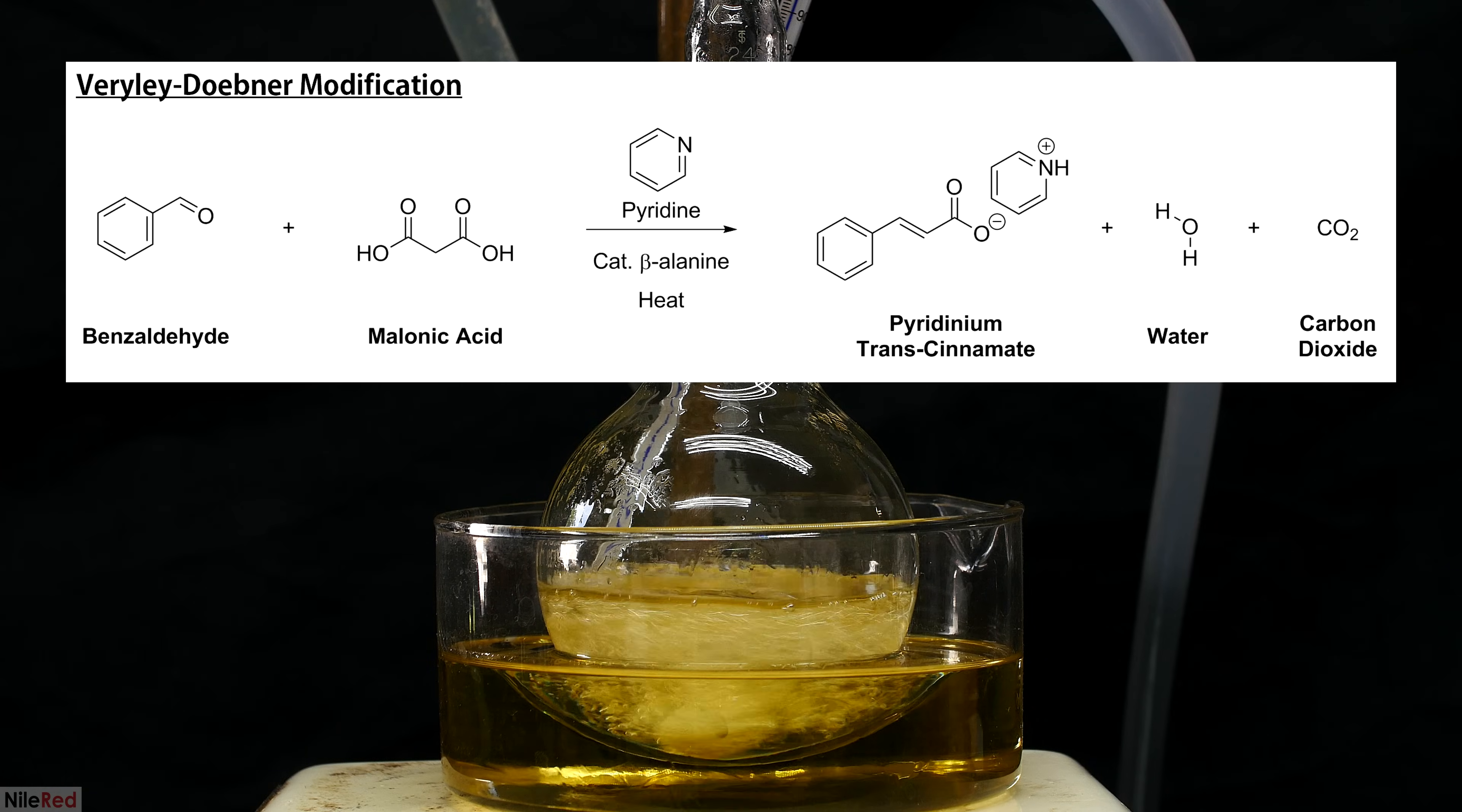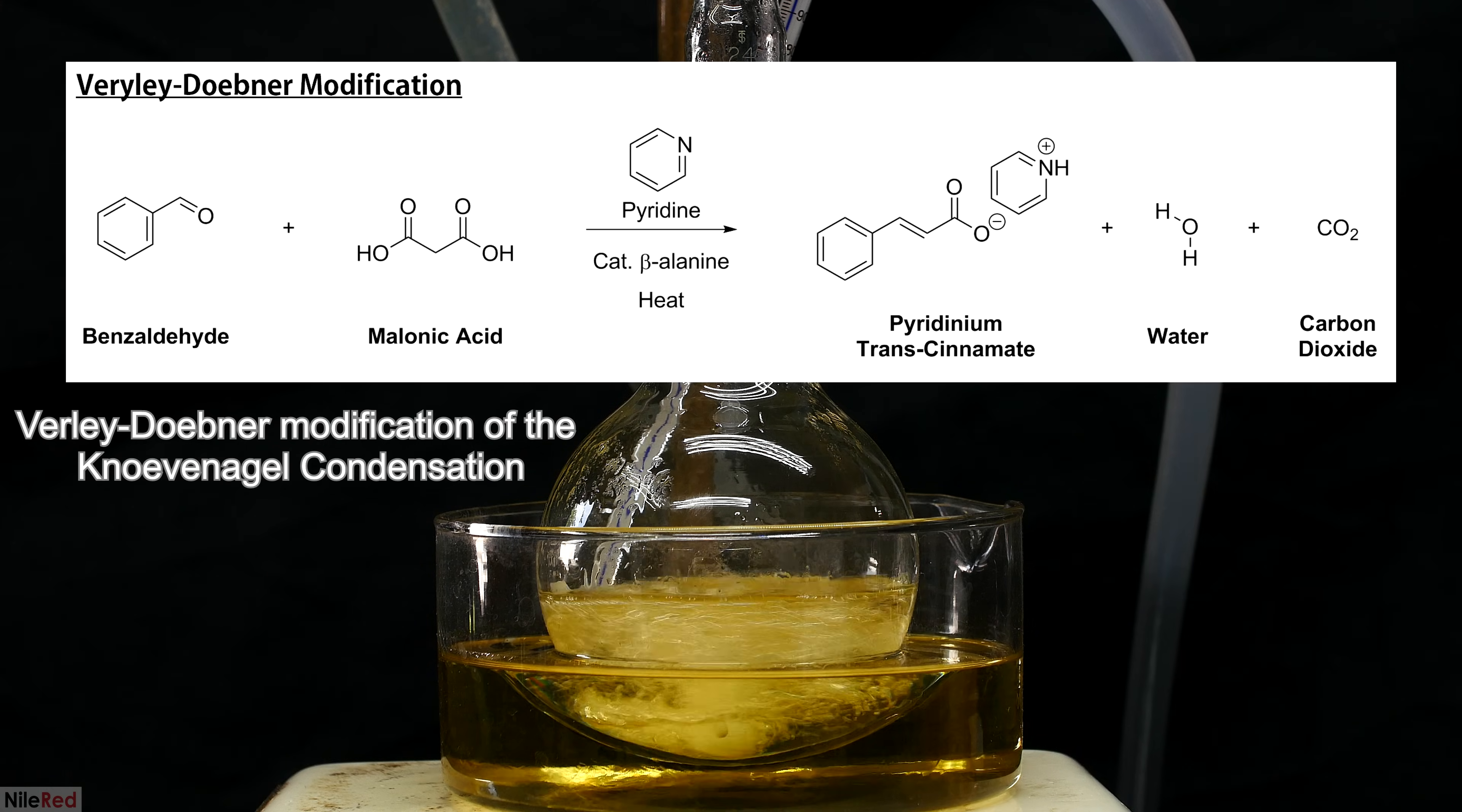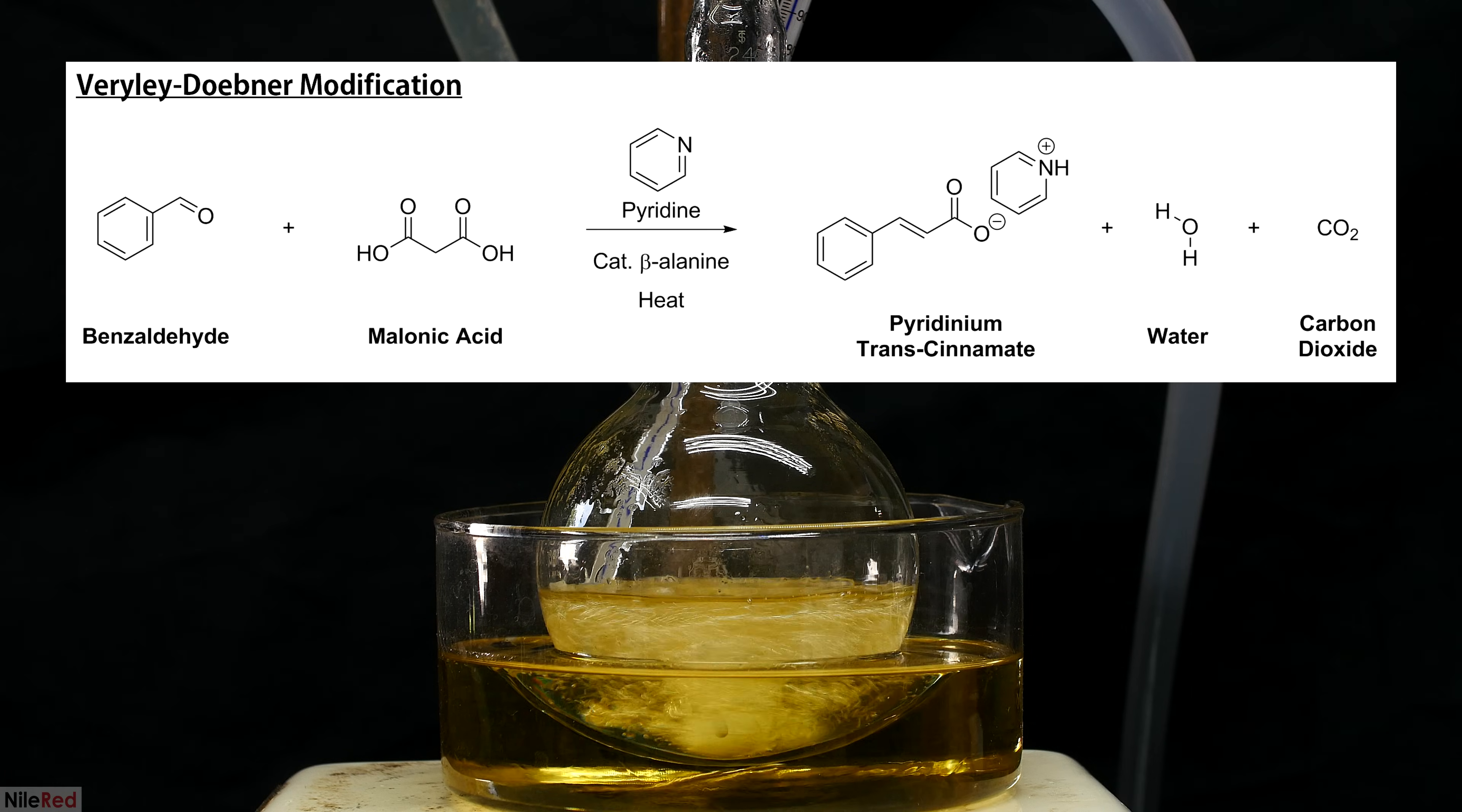Here's the overall reaction that's taking place. As I mentioned earlier, the Dr. Seuss-like name for this reaction is the Perkin-Döbner modification of the Knoevenagel condensation. What we have is benzaldehyde reacting with malonic acid to form pyridinium trans-cinnamate, water, and CO2.